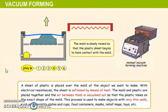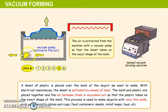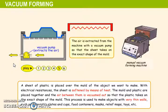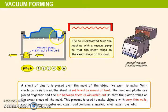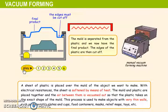The mold is slowly raised so that the plastic sheet begins to have contact with the mold. The air is extracted from the machine with a vacuum pump so that the sheet takes on the exact shape of the mold. The mold is then separated from the plastic and we now have the final product. The edges of the plastic are then cut off.